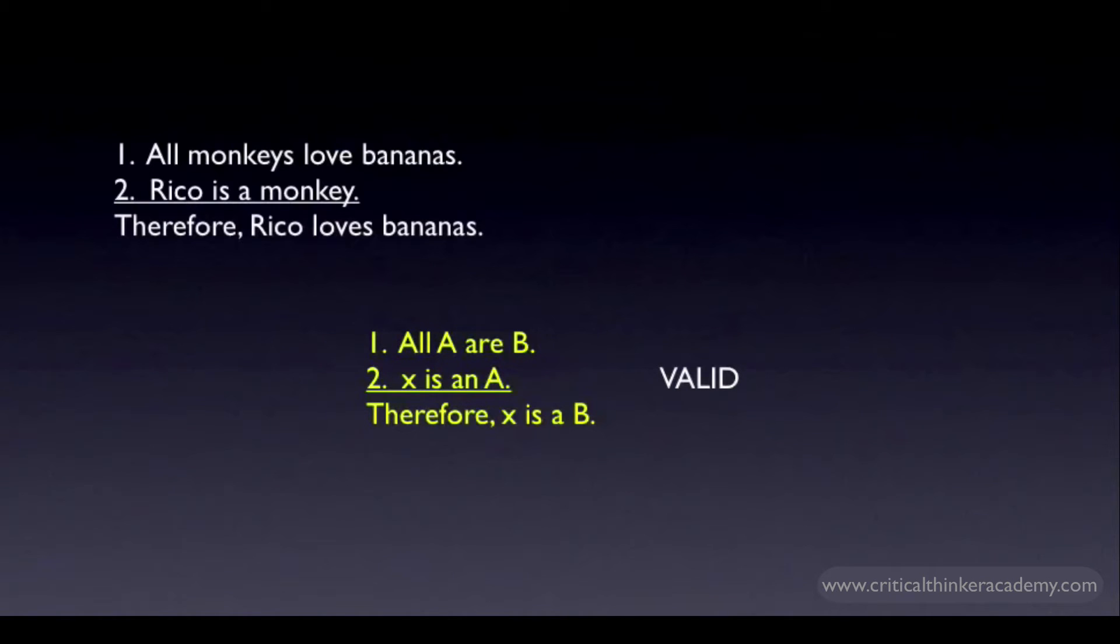Lowercase letters are used to refer to individual members of a category. So Rico, an individual monkey, is represented by a lowercase x. Now, note the directionality of the inference. If X is a member of the category A, then I can validly infer that X is also a member of the category B. But I can't go the other way.